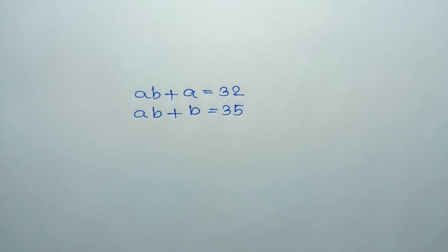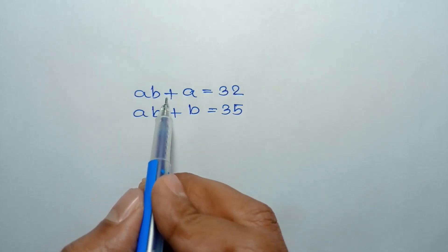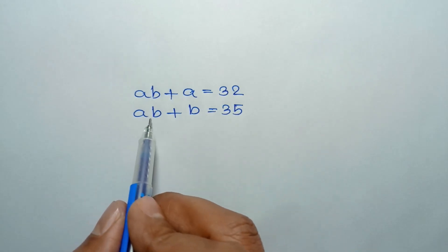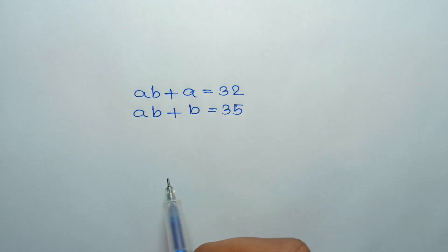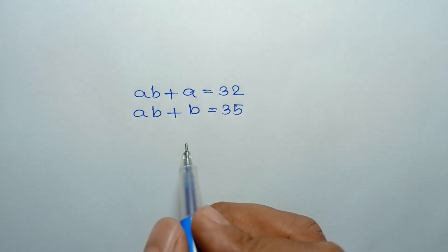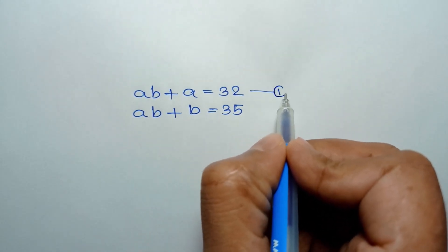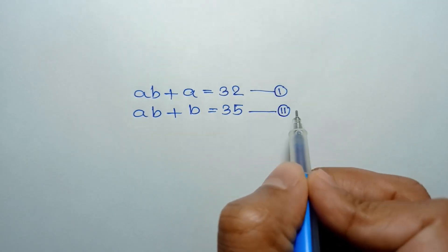Hi everyone. In this video, I am going to show how to solve this system of equations: AB plus A is equal to 32, and AB plus B is equal to 35. Let's call it equation number 1 and equation number 2.